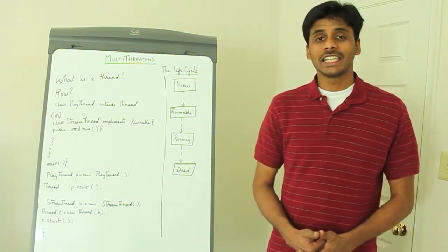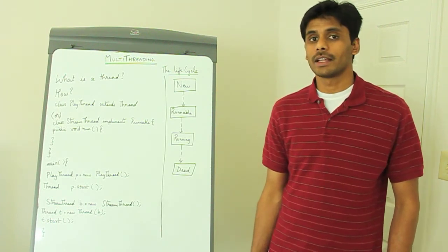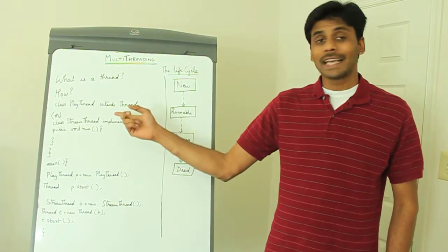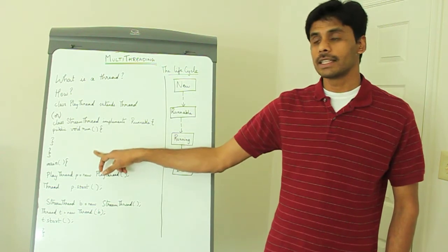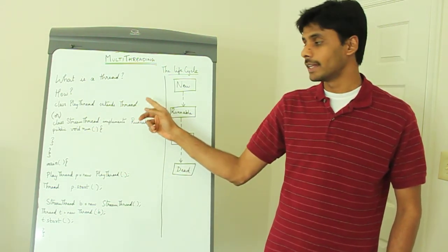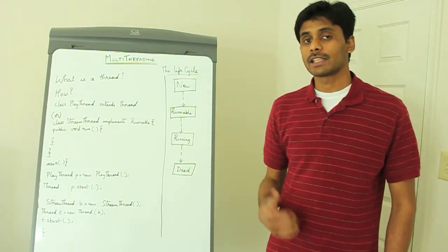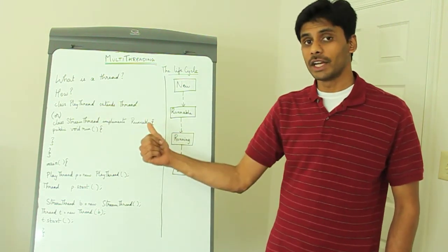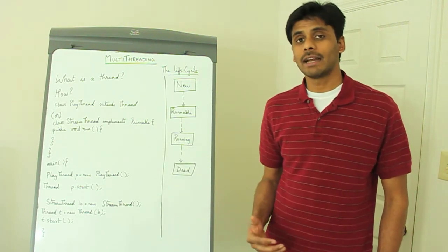To create additional threads or to create a multi-threaded application using Java, you can create threads in two different ways. The first way is to extend the Thread class and override the run method. We will create a class that extends the Thread class and then override the run method which will have all our application code. In our YouTube example, we will create a play thread that can play the video, and within the run method we will have all the application code to play the video.